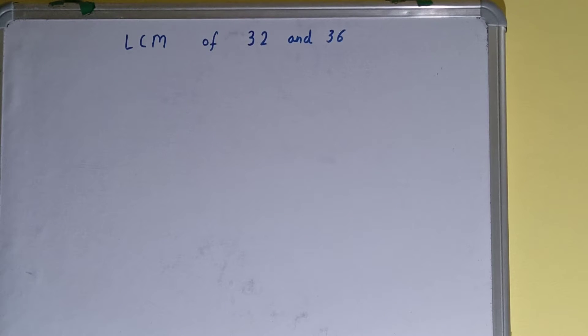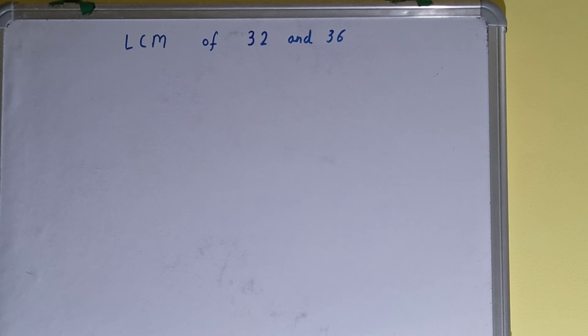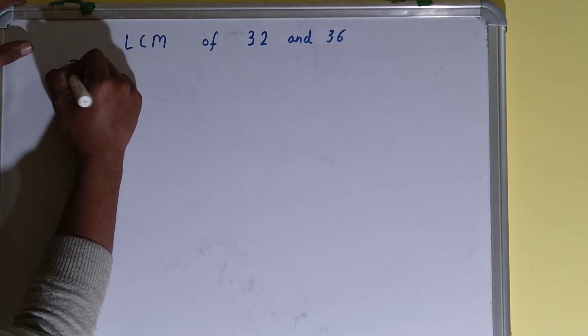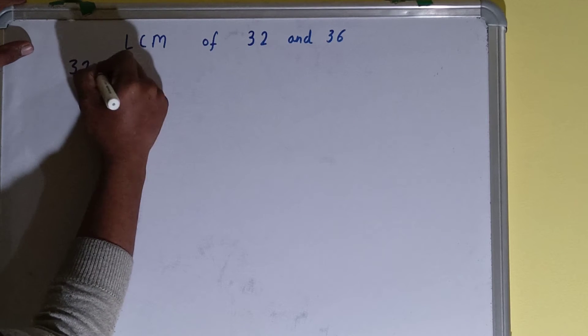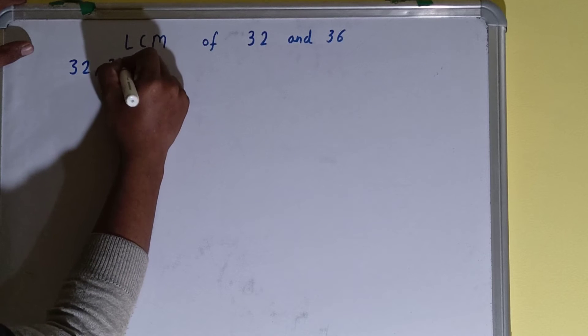Hello friends, in this video I'll be helping you with the LCM of the numbers 32 and 36. Let's start. To find it out, we first need to write both the numbers like this: 32, 36.